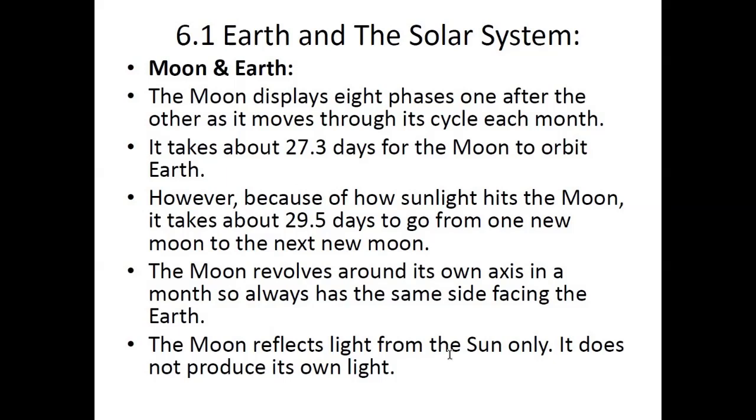The Moon and Earth: The Moon displays eight phases one after the other as it moves through its cycle each month. It takes about 27.3 days for the Moon to orbit Earth. However, because of how sunlight hits the Moon, it takes about 29.5 days to go from one new moon to another new moon. One month according to the lunar calendar would be 29.5 days.